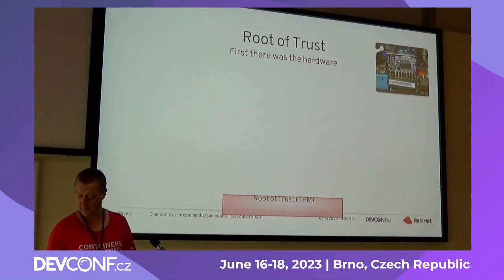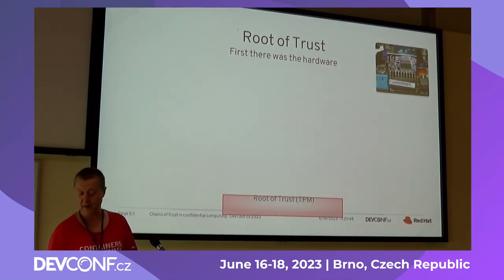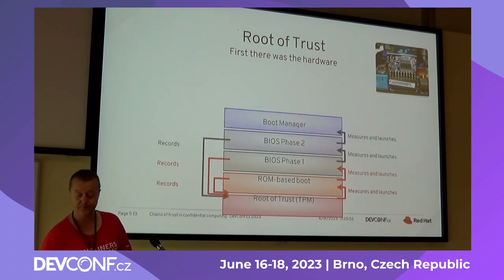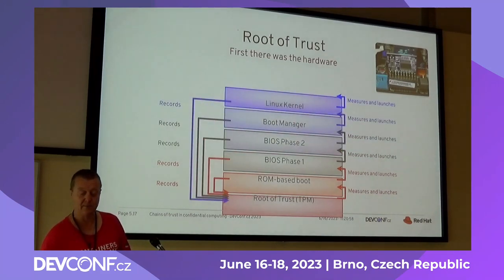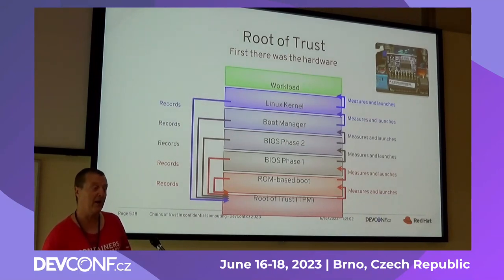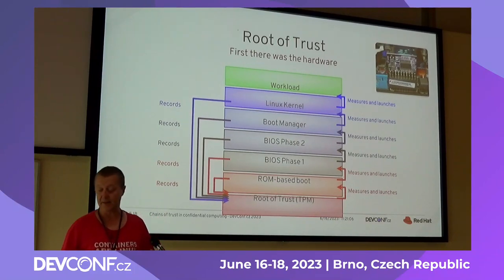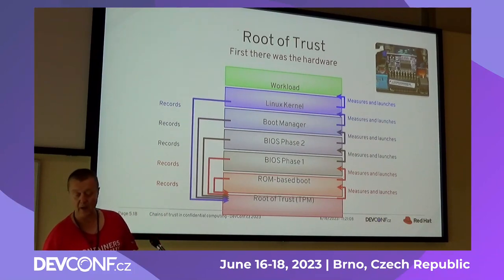Let's start with root of trust. You're probably familiar with something like a TPM — that's the root of trust that measures and loads the next step, and then again and again until you reach your workload. Each step will measure itself and record that in some physical device that has a hardware-enforced record of what happened.